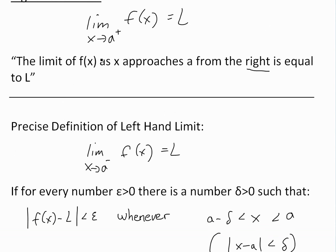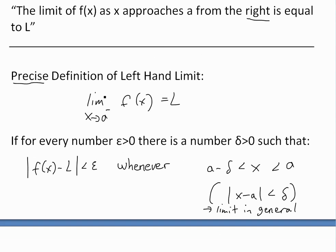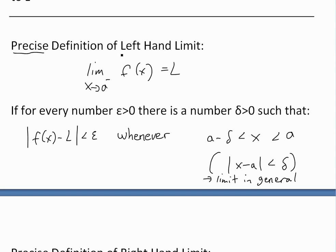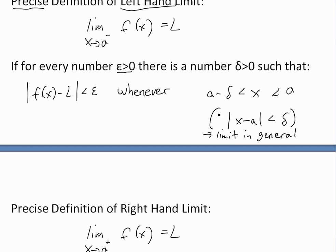To reformulate these intuitive definitions into precise definition form — similar to my earlier video on the precise definition of limits in general — we have this one for the left-hand limit: the limit as x approaches a from the left (negative side) of f of x equals L, if for every number epsilon greater than zero, there is a number delta greater than zero, such that the absolute value of f of x minus L is less than epsilon, whenever x is between a minus delta and a.